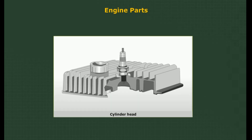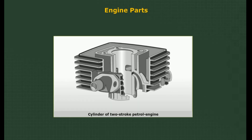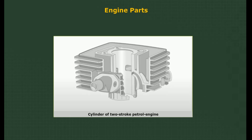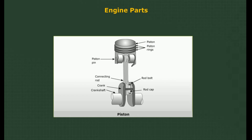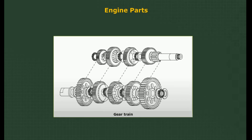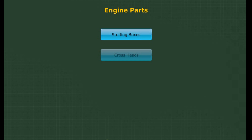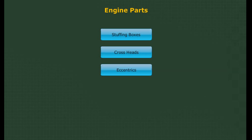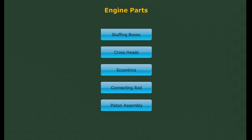Engine parts. A machine is an assembly of various links or parts. Each part is completely dimensioned to facilitate easy fabrication. It is essential to know some parts of the engine in simple forms. Let us discuss in detail about some of the major parts of the engine: stuffing boxes, cross heads, eccentrics, connecting rod, and piston assembly.